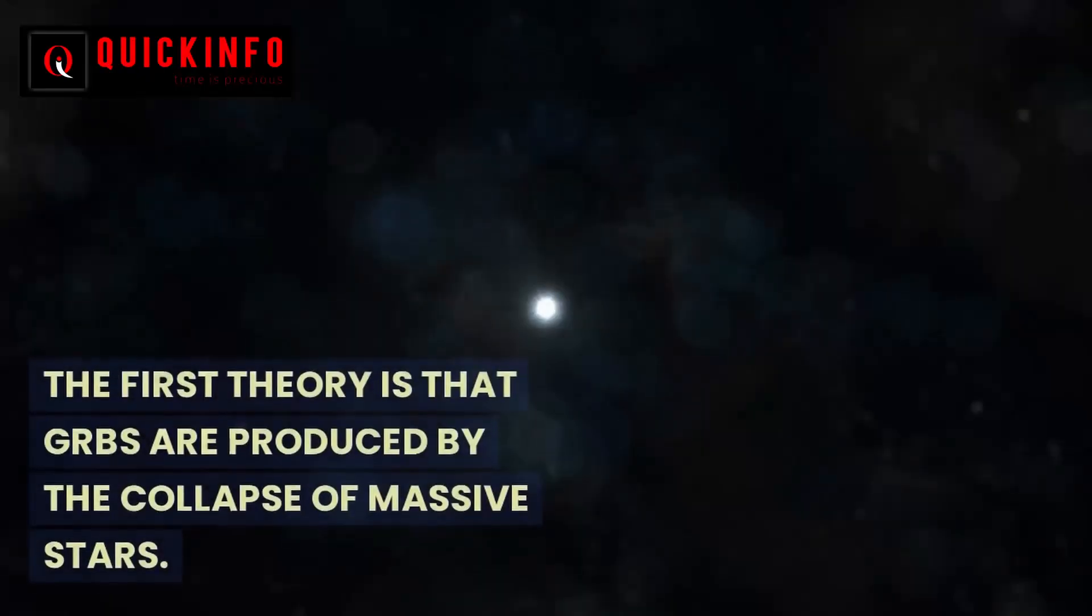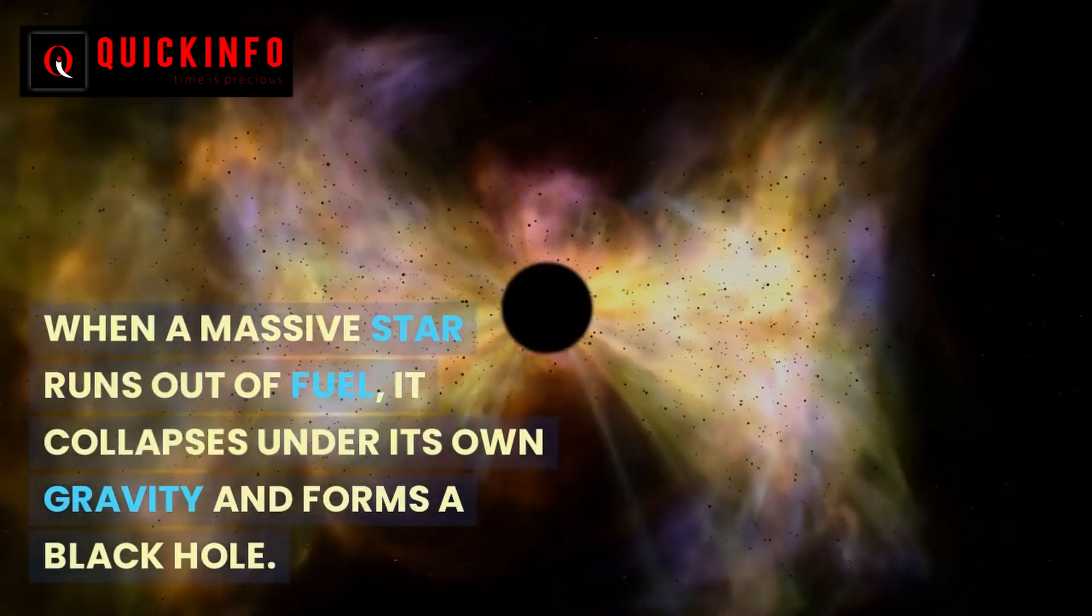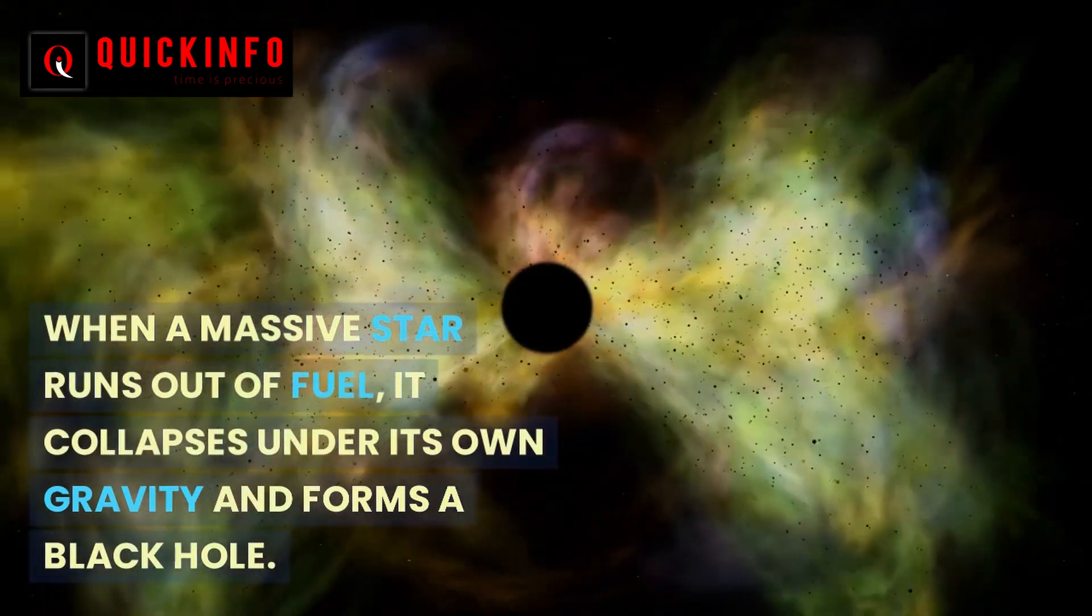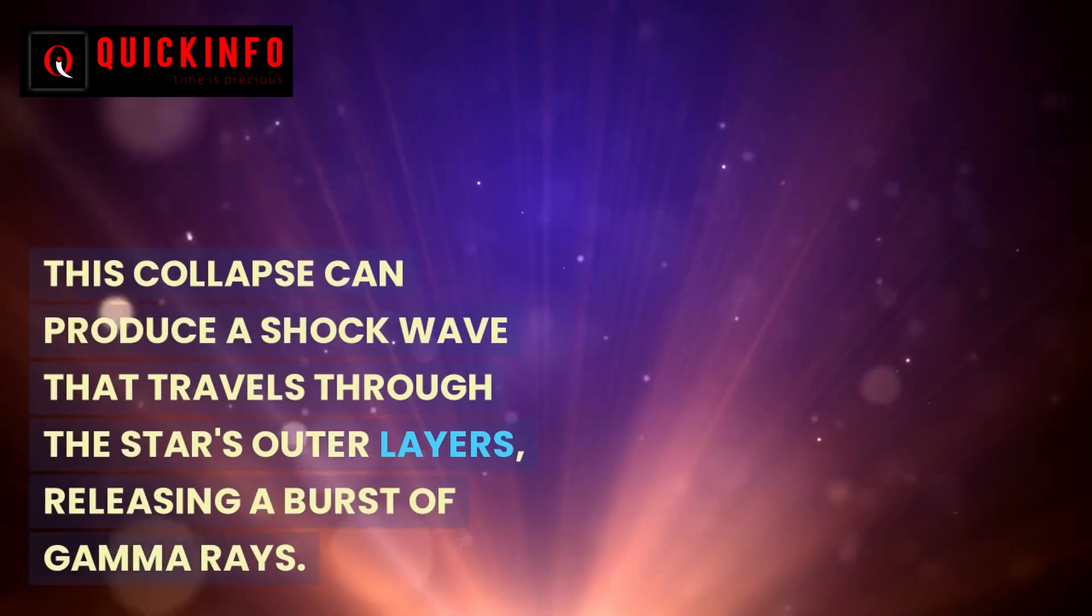The first theory is that GRBs are produced by the collapse of massive stars. When a massive star runs out of fuel, it collapses under its own gravity and forms a black hole. This collapse can produce a shock wave that travels through the star's outer layers, releasing a burst of gamma rays.